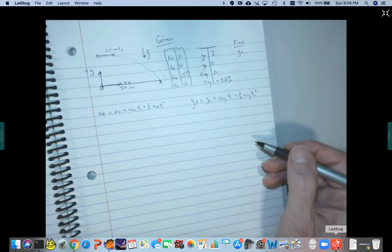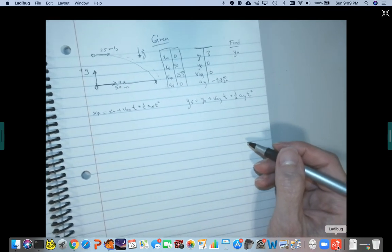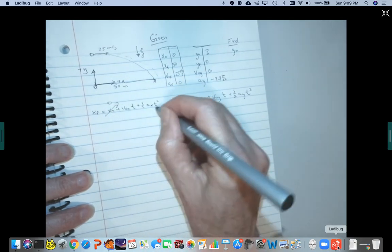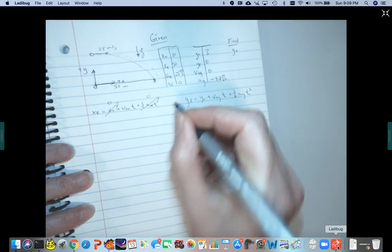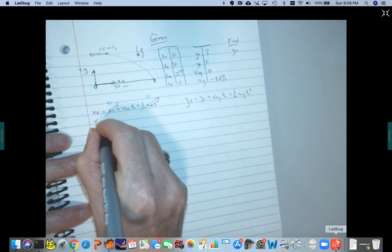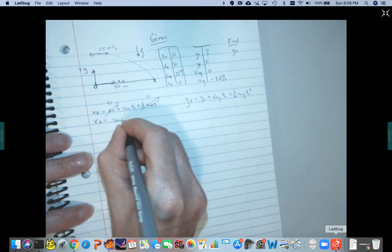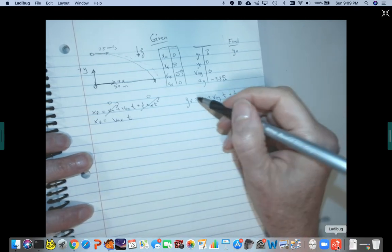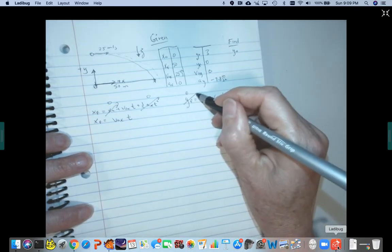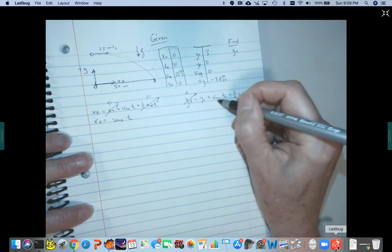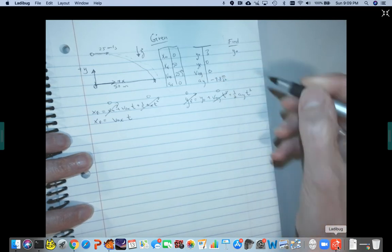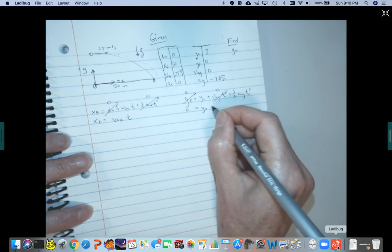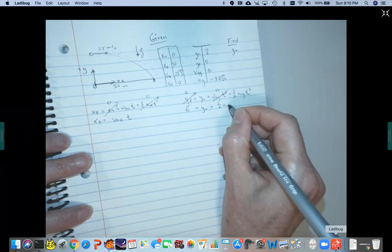Let's see what we can get rid of for zeros. So we know x initial is zero. We know ax is zero. So that whole term goes away. So my x equation simplifies to x final is v0x times t. For the y equation, I know my final is zero. My initial y is zero. So that term goes away. So I get zero equals y initial plus one half ay t squared.